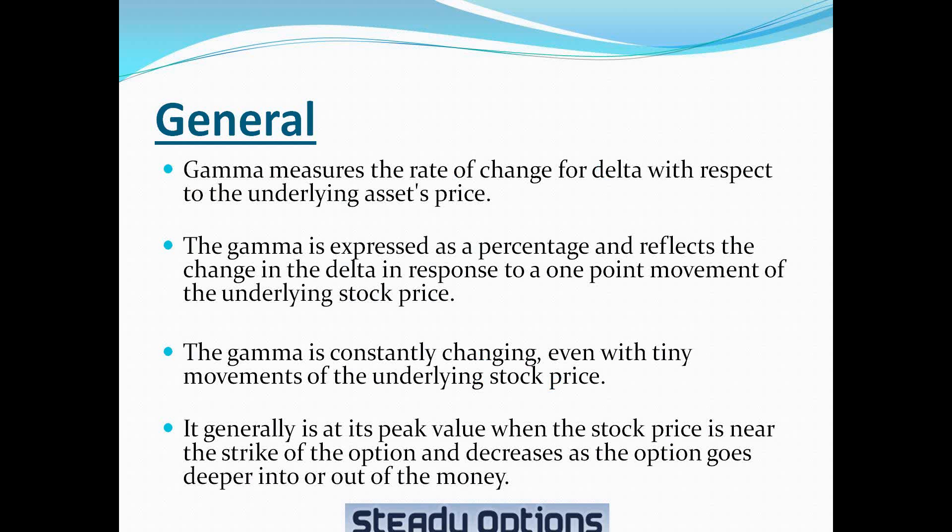So what is gamma? Gamma is one of the options Greeks that measures the rate of change for delta with respect to the underlying asset price.